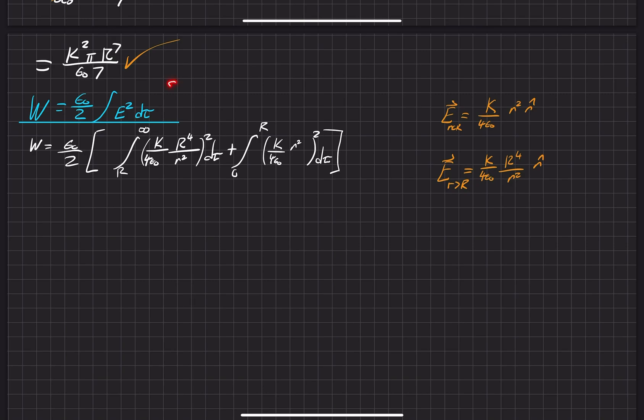So the way we're going to find the work is we're taking these infinitesimally small pieces from infinity all the way to where that charge distribution is, and we're pulling those from infinity to zero and forcing them together to make that sphere. And so we're going to have to do an integral from infinity to zero.